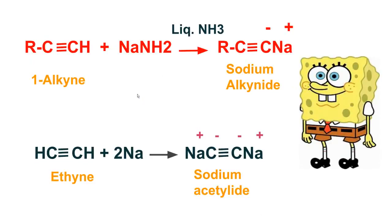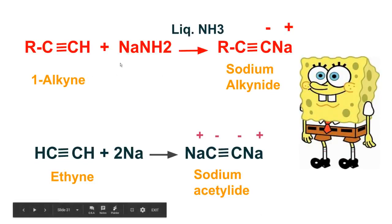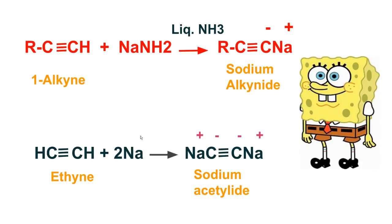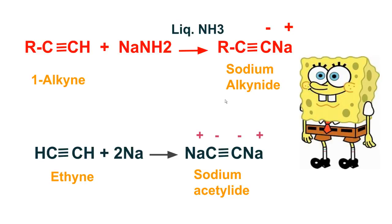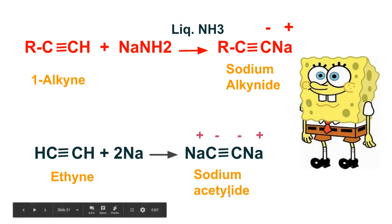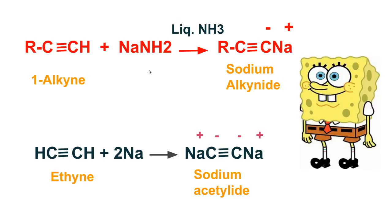When a terminal alkyne or ethyne is treated with sodamide in the presence of liquid ammonia, or passed over molten sodium, alkanides and acetylides are obtained. The alkanide is the negative part of a terminal alkyne when hydrogen is removed from it. The acetylide is the negative part of acetylene or ethyne when hydrogen is lost from it. So this is sodium alkanide, where hydrogen is replaced by sodium, and this is sodium acetylide, where the hydrogens are replaced by sodium. These reactions demonstrate the acetic nature of alkynes.